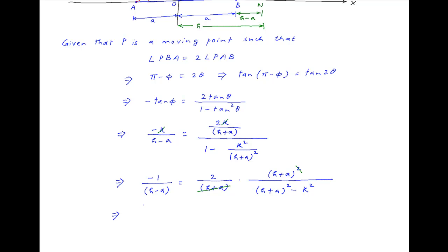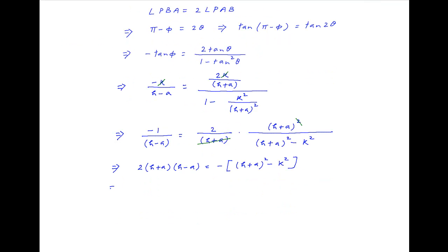Cross multiplying this becomes 2 times (h plus a) times (h minus a) is equal to minus of (h plus a) whole squared minus k squared. This implies that 2h squared minus 2a squared is equal to k squared minus h squared plus 2ah plus a squared.